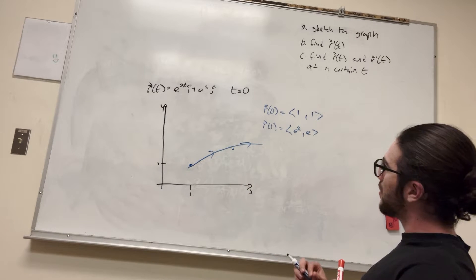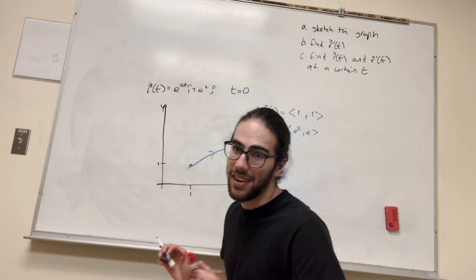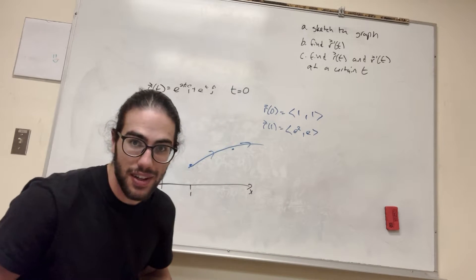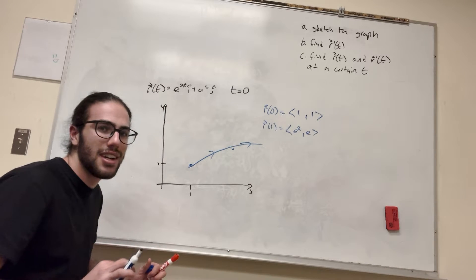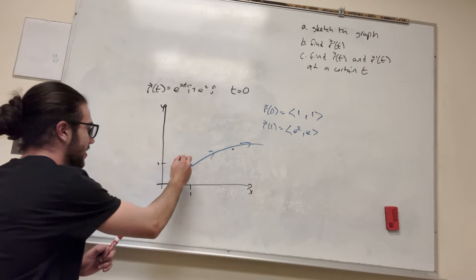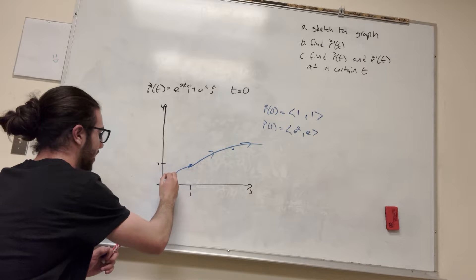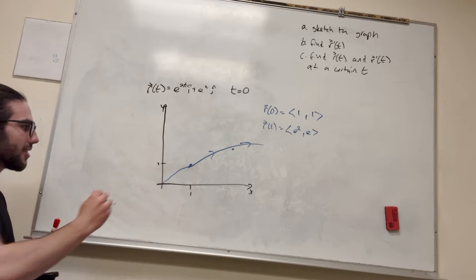But then when you go negative, what you know about e is it can never be negative. If you have like a negative 1 in this t, that's just going to be a very tiny little number, but it's never going to cross. So it's going to go down here, approach, but never touch 0. It kind of goes like that.